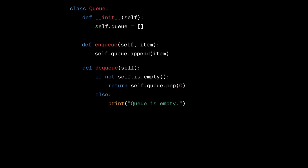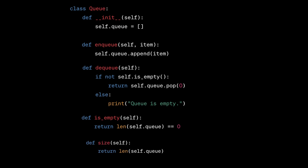If the queue is empty, then it will simply print that the queue is empty. We also have a function called isEmpty which checks if the list is empty or not. And lastly, we have one more function called size which returns the number of elements currently available in the queue.